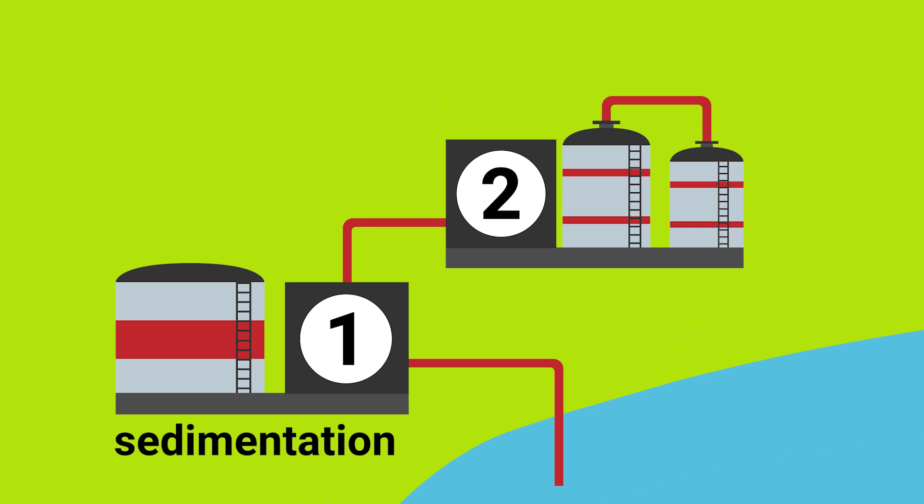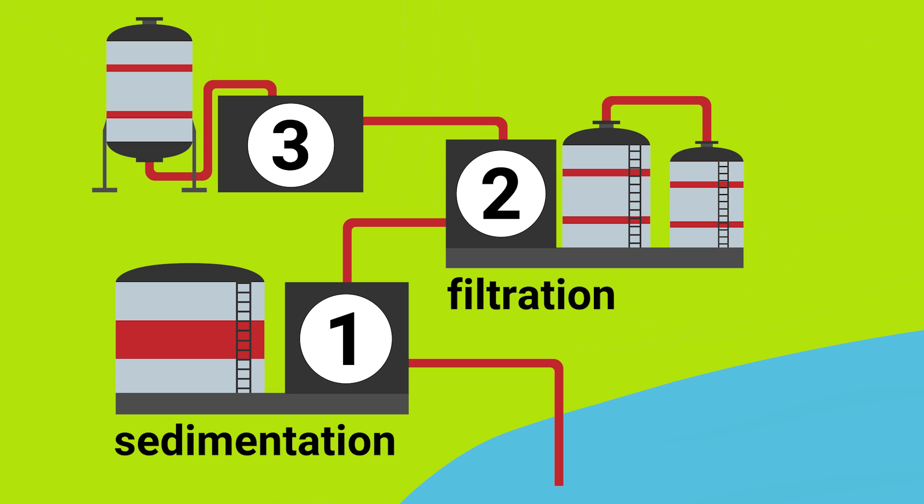The second step is filtration where fine particles like sand are removed. The final step is technically a sterilization step but we call this chlorination and microbes like bacteria are killed in this step using chlorine.